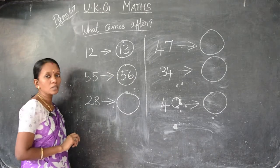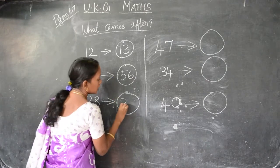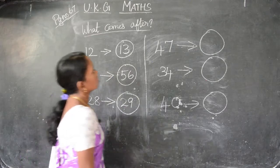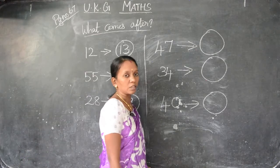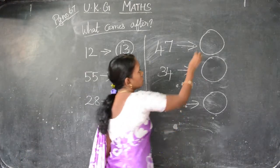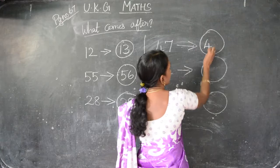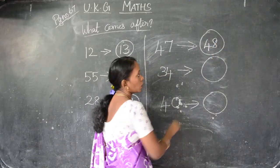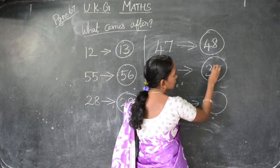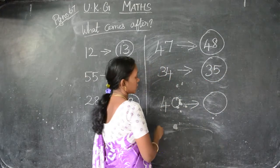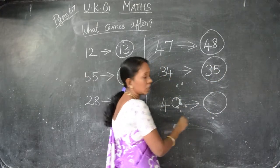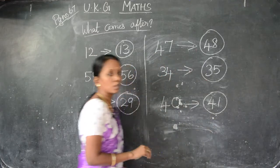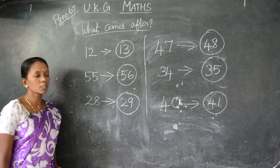After 28, 29. Next, 47. After 47 is 48. After 34 is 35. Next, after 40 is 41. Copy it children, fast.